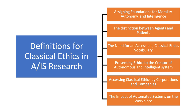Third, the need for an accessible classical ethics vocabulary, which means we need a user-friendly vocabulary to raise awareness of classical ethics in the digital society. Fourth, presenting ethics to the creators of autonomous and intelligent systems, which means we need to provide students and engineers with practical tools to work on engineering projects aligned with classical ethics. Fifth, accessing classical ethics by corporations and companies — describing the need for accessible methods to integrate classical ethics into the daily operations of companies and corporations. Finally, the impacts of autonomous systems on the workplace, describing issues of data protection, bias, and error outcomes when employers apply AIS in the workplace.